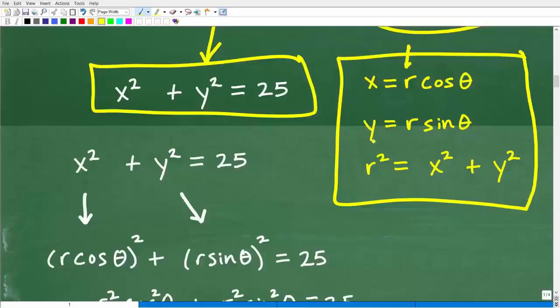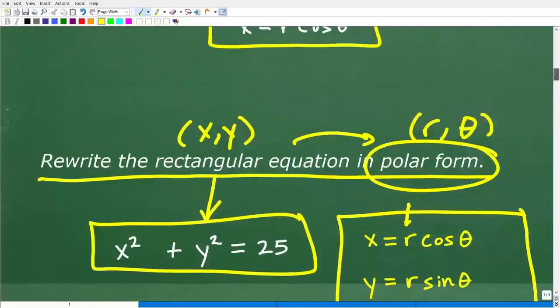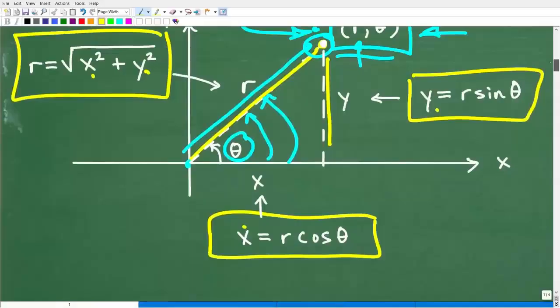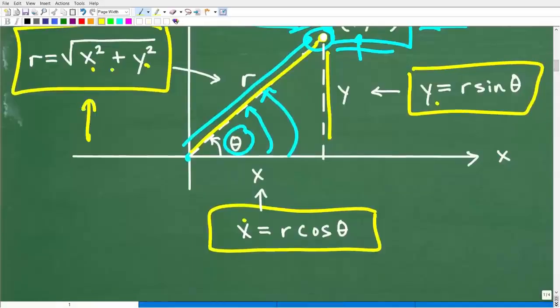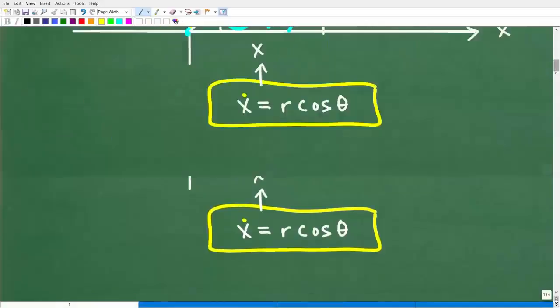Again, r is the radius. Y is equal to r sine theta. And r squared is equal to x squared plus y squared. And again, if we take the square root of both sides, we get r is equal to the square root of x squared plus y squared.